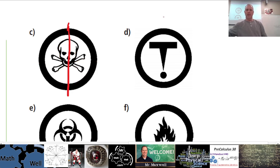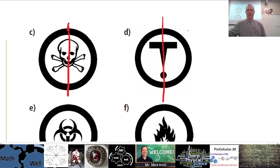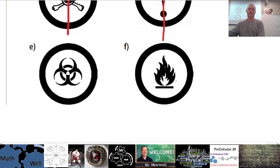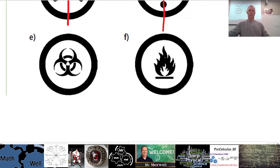What about the next symbol — that kind of looks like the Tesla sign? Actually, I think it's a toxic substance symbol. Does that look like it has a line of symmetry? What about a horizontal line? No — there's no circle part on this side, and the T shape doesn't work either. So just one line of symmetry for that one.